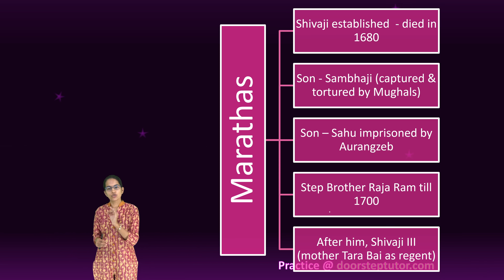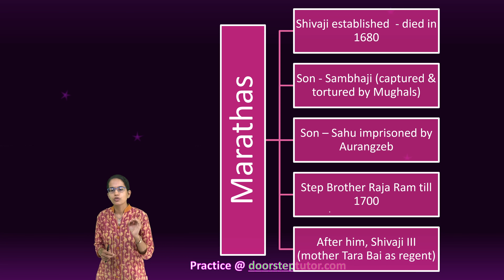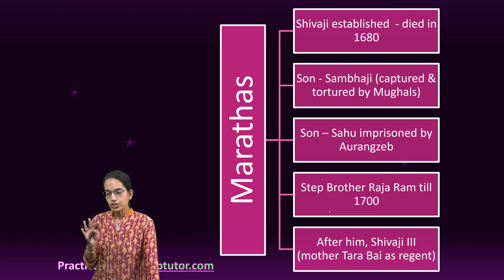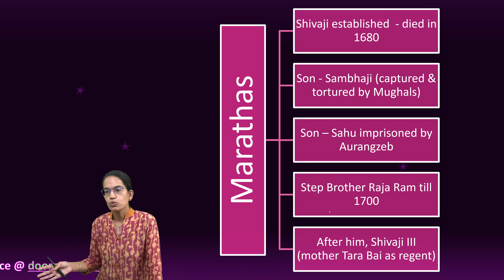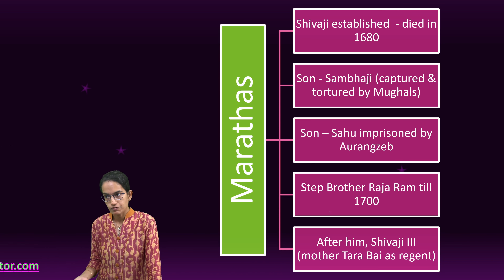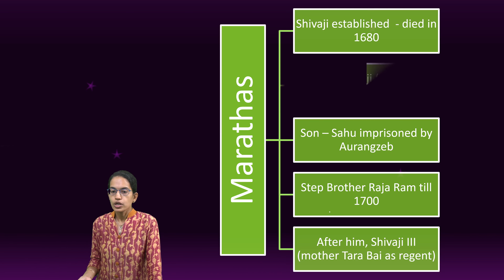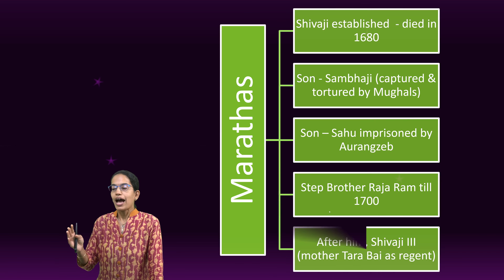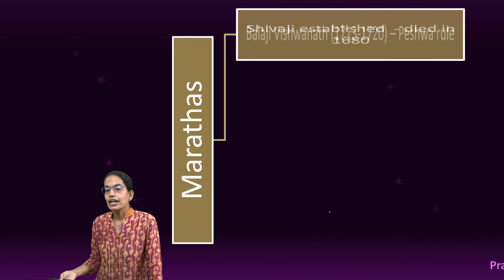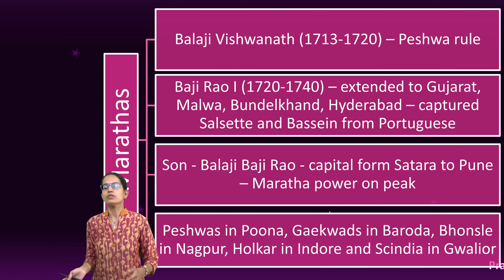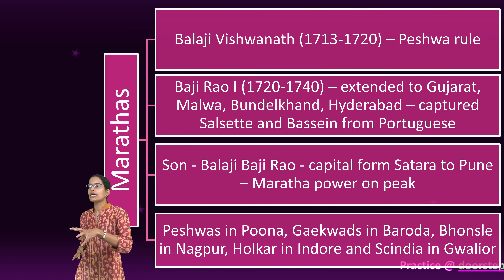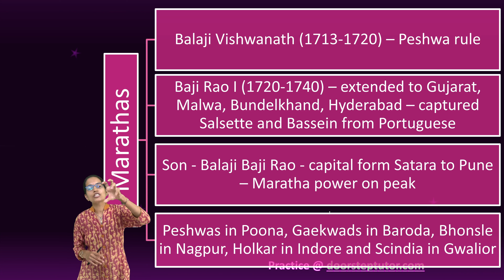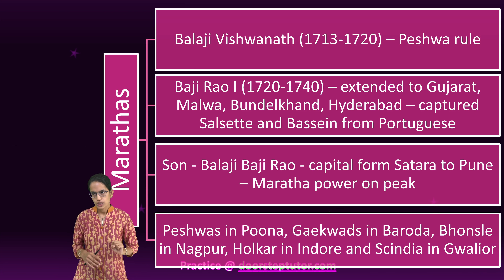But actually, Sahu was not a strong ruler. The actual rule was not of Sahu but of the Peshwa Balaji Vishwanath during that time. It was the rule of Balaji Vishwanath as the real head who became powerful — ultimately, in the Maratha empire, the Peshwa rule came to power.